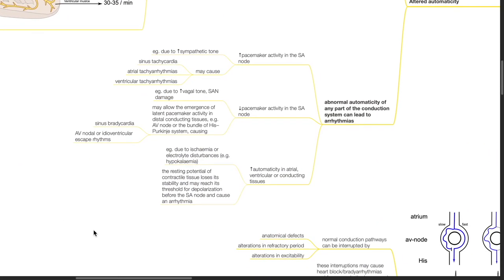Abnormal automaticity of any part of the conduction system can lead to arrhythmias. Increased pacemaker activity in the SA node can be due to increased sympathetic tone and may cause sinus tachycardia, atrial tachycardia, atrial tachyarrhythmias, and ventricular tachyarrhythmias. Decreased pacemaker activity in the SA node may be due to increases in vagal tone or SA node damage. This may allow the emergence of latent pacemaker activity in distal conducting tissues such as the AV node or the Bundle of His, Purkinje system, causing sinus bradycardia or AV nodal or idioventricular escape rhythms.